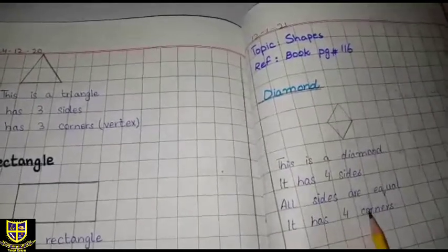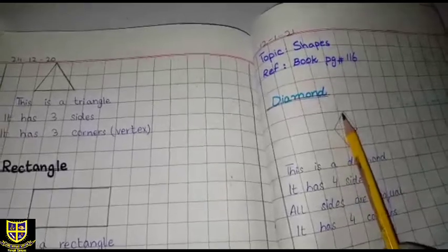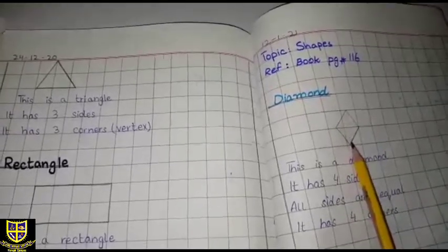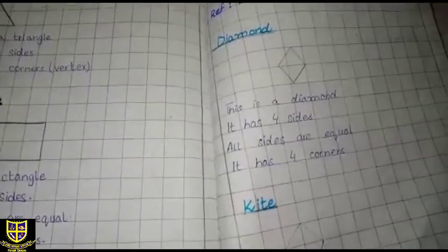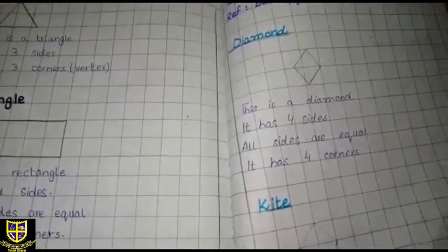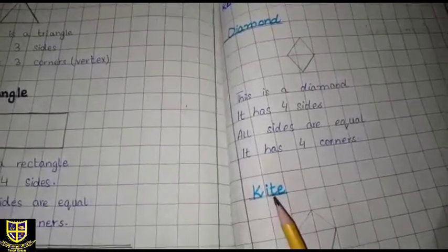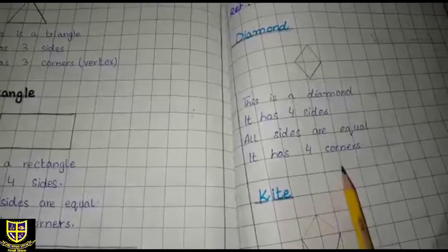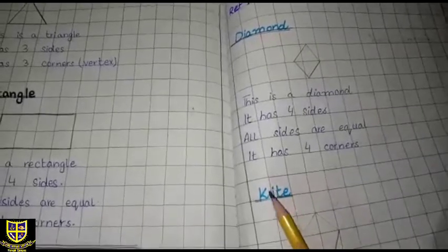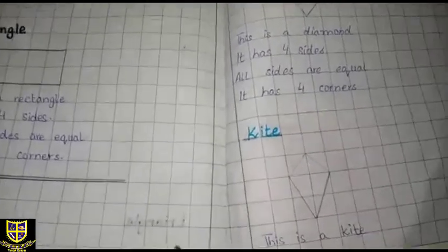It has four corners: one, two, three, four. Fine. You have to write this way. After that, we will discuss about kite. Now you have to write kite heading. You have to leave a line and write kite, and double underline.